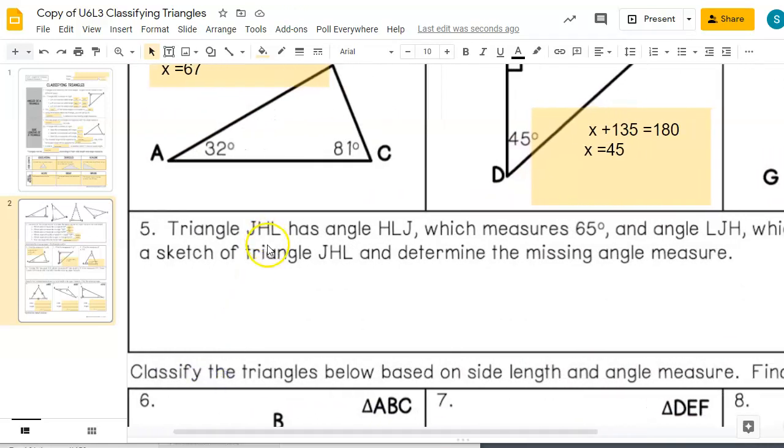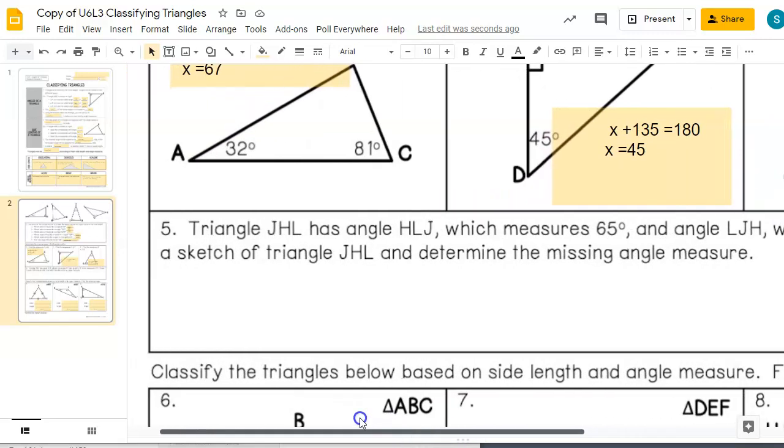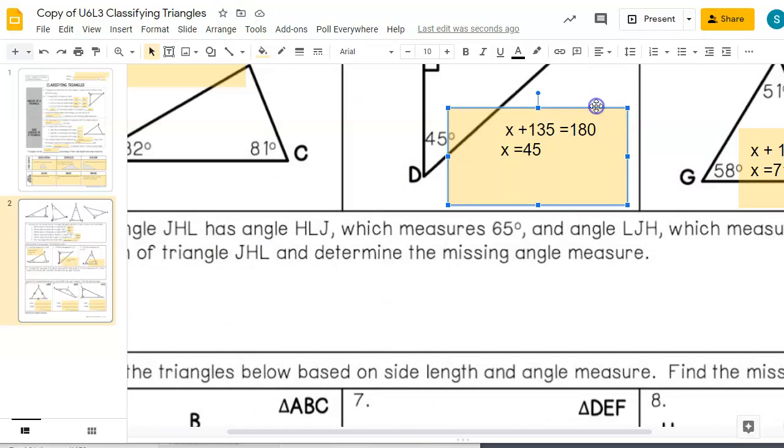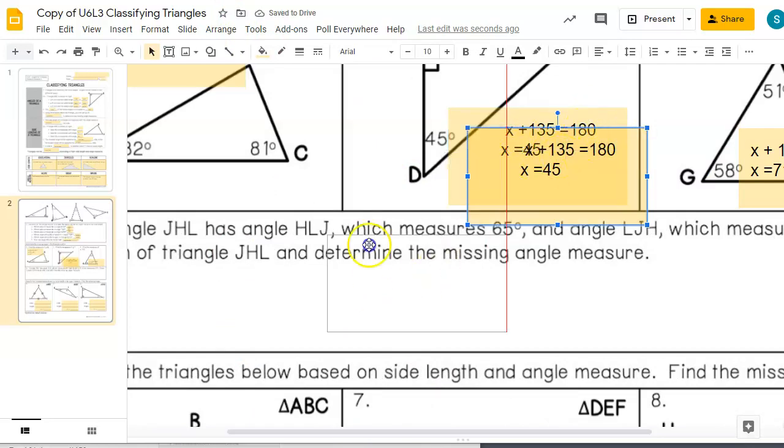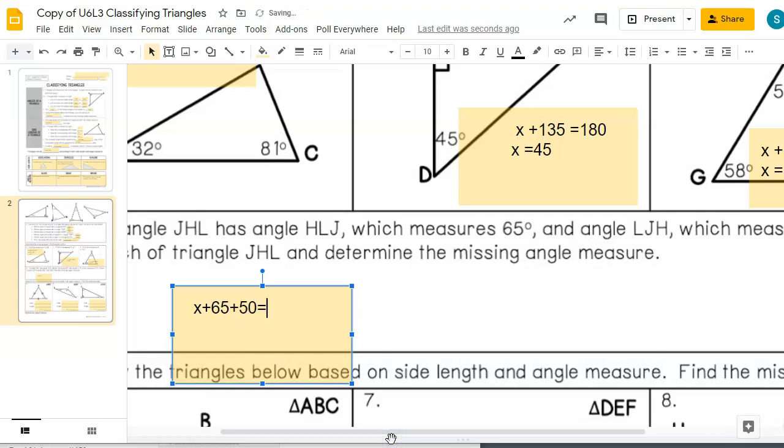Triangle JHL has an angle HLJ, which measures 65 degrees, and angle LJH, which measures 50. Draw a sketch of the triangle and determine the missing angle measure. So we can come up with our equation, X plus 65 plus 50 equals 180, because all triangles add up to 180. We combine the like terms there. It looks like 115. Subtract 115 from both sides, and we get X equals 65 degrees. So our missing angle is 65 degrees.